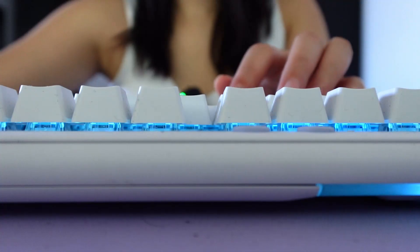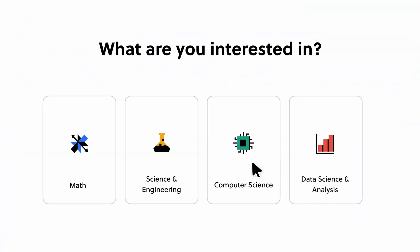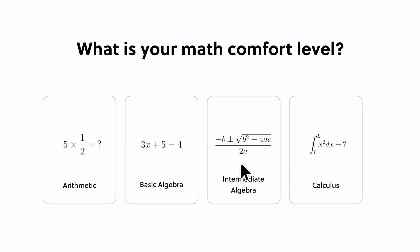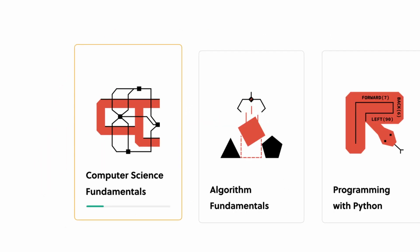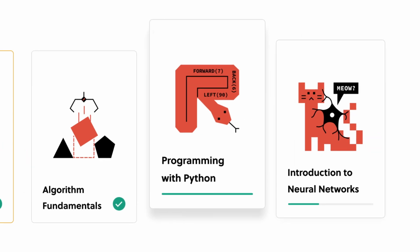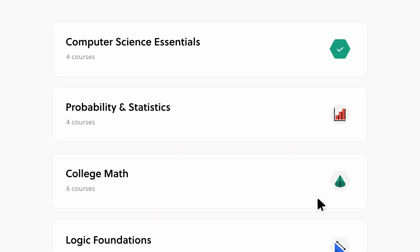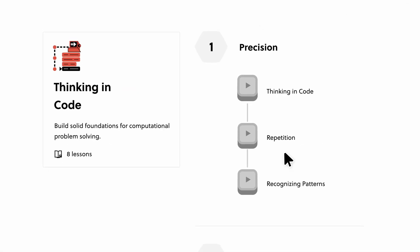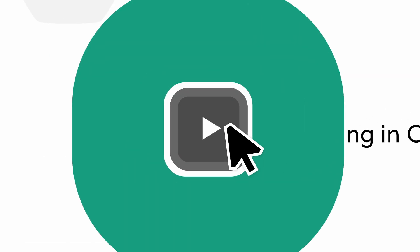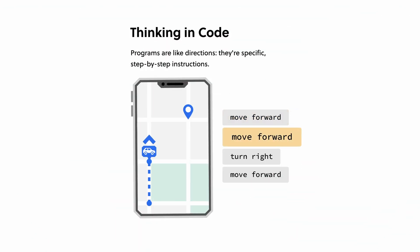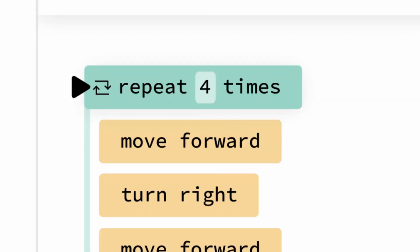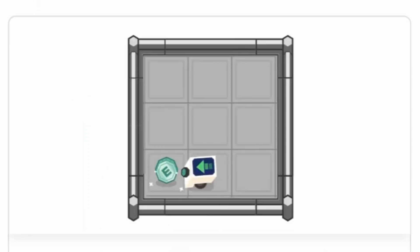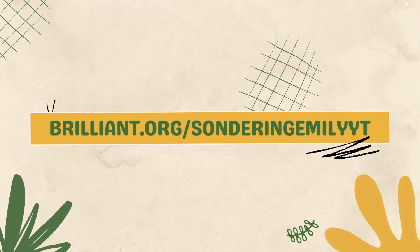Want to make a game in Google Sheets but don't know how to code? Brilliant has you covered — it's a free and easy way to learn math, data science, and computer science interactively. Brilliant has thousands of lessons to help you learn coding every day, with tutorials to fit any skill level and new lessons every month. I'd recommend the Thinking in Code course, which gives you real-world problems like maps, app navigation, and writing a program that automatically responds to work messages. Get started free for 30 days — the first 200 of you get 20% off an annual plan at brilliant.org/saunderingemilyyt.